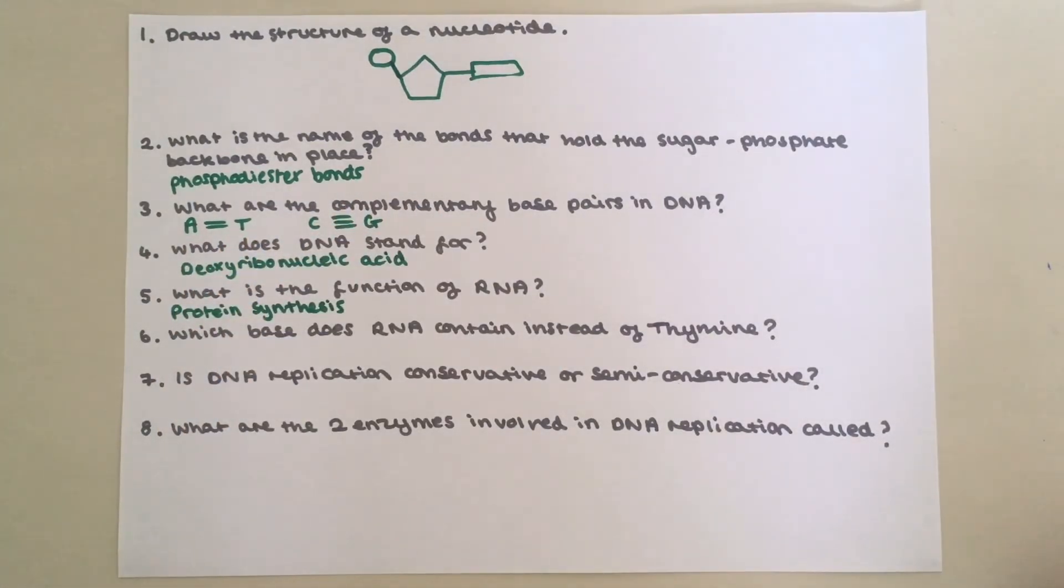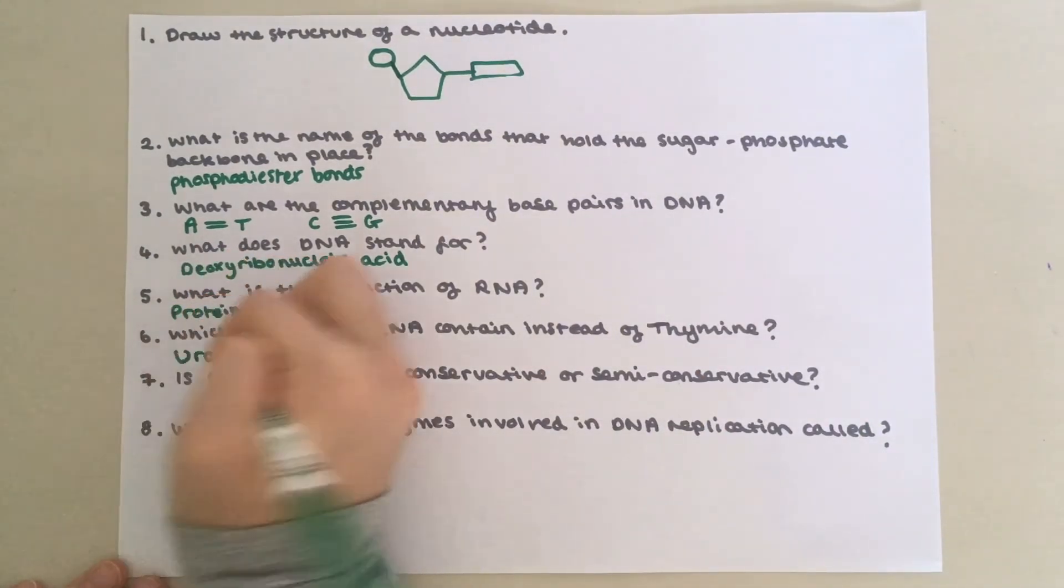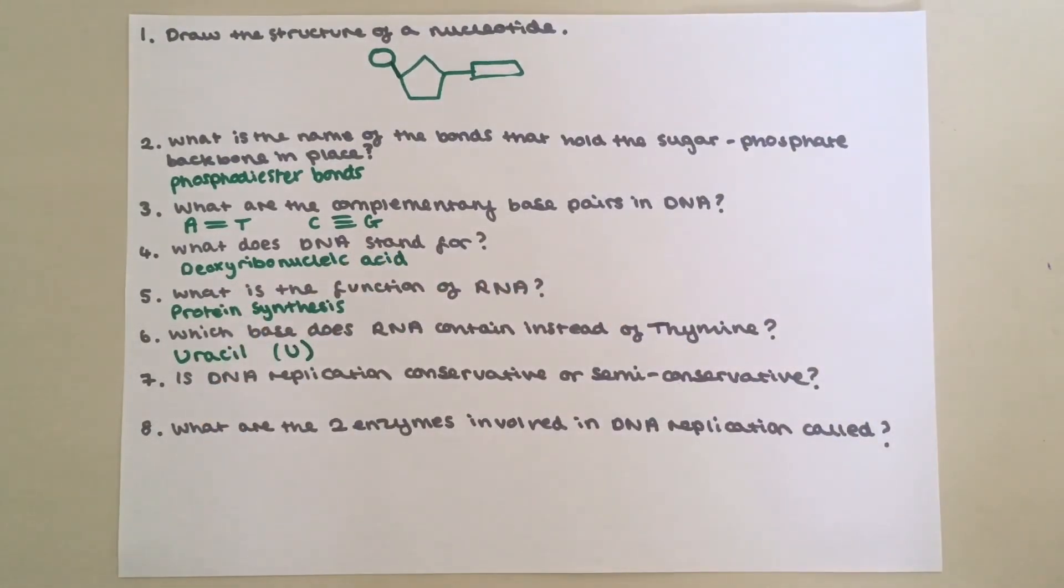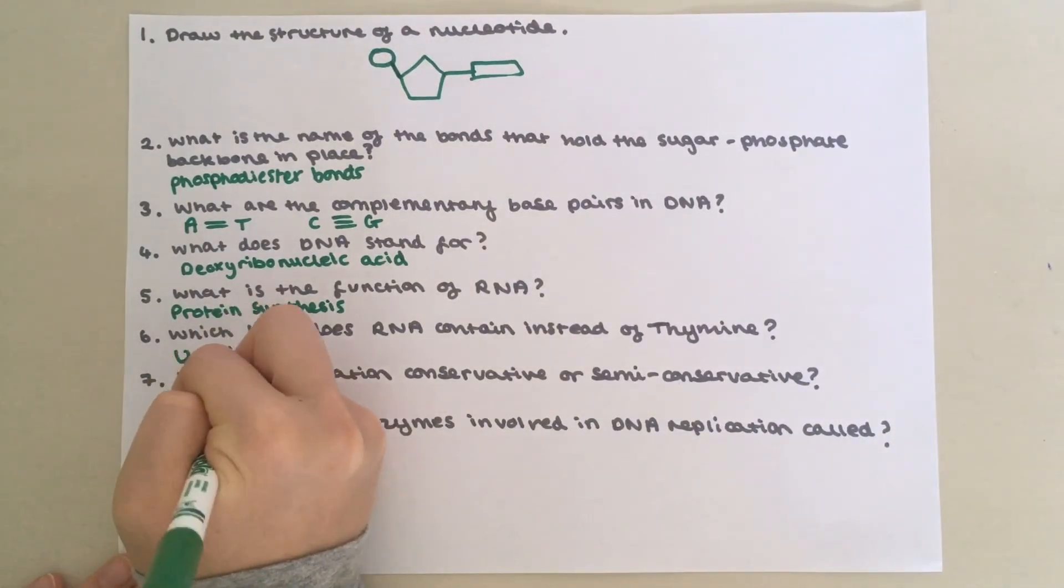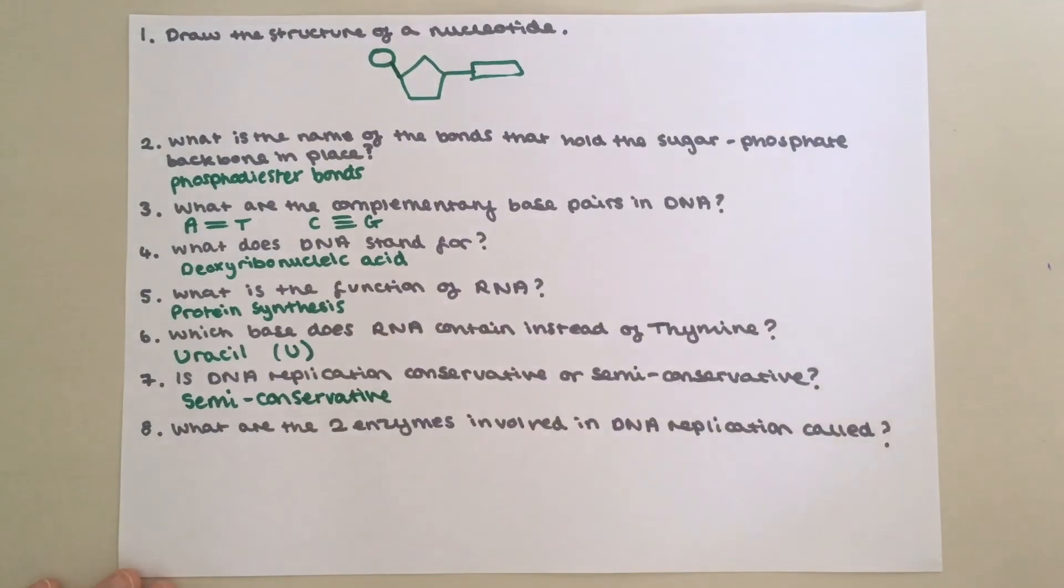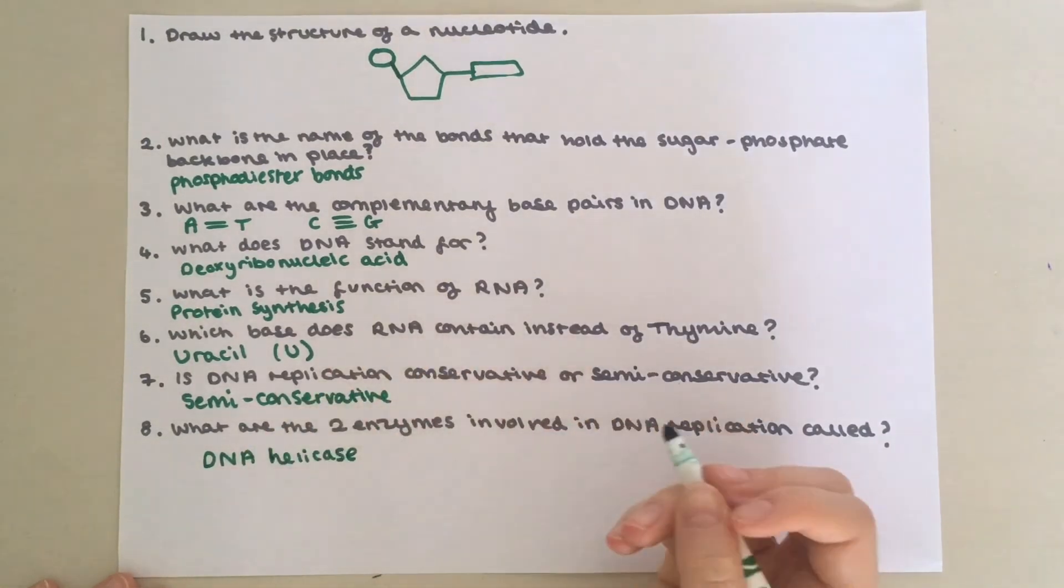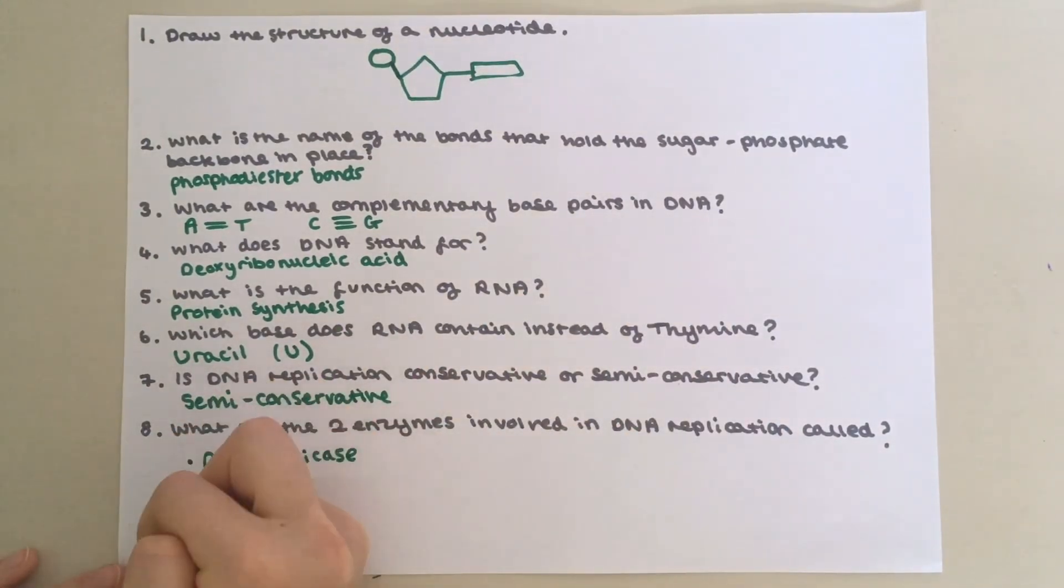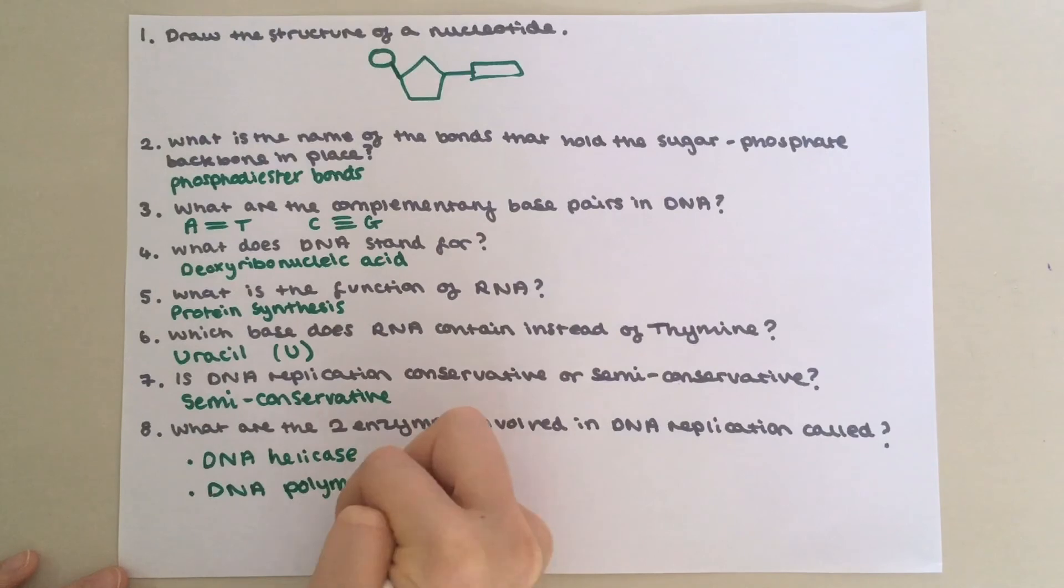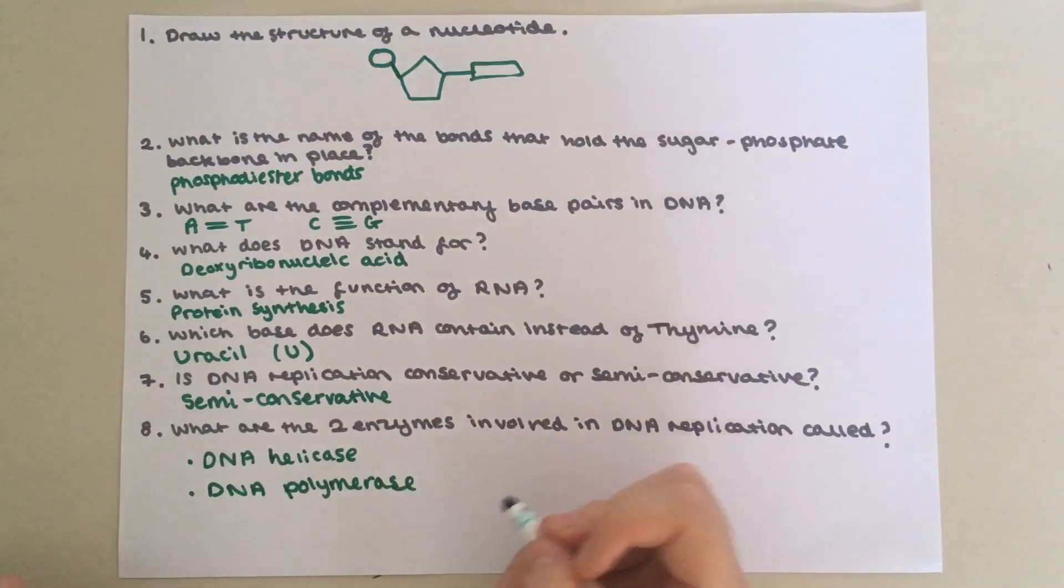Question six, which base does RNA contain instead of thymine? It contains uracil, represented by U. Seven, is DNA replication conservative or semi-conservative? It is semi-conservative. And lastly, what are the two enzymes involved in DNA replication called? You've got DNA helicase, which breaks the hydrogen bonds between the complementary base pairs, unzipping the double helix. And then you have DNA polymerase, which joins the nucleotides in the newly forming strands.